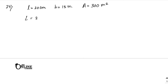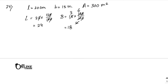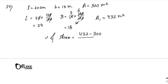The new length L equals 20 into 120 by 100, and the zeros cancel, giving 24. The new breadth B equals 15 into 120 by 100, giving 18. The new area A1 equals 24 into 18, which is 432 square centimeters. The percentage increase in area equals (432 minus 300) divided by 300 into 100.